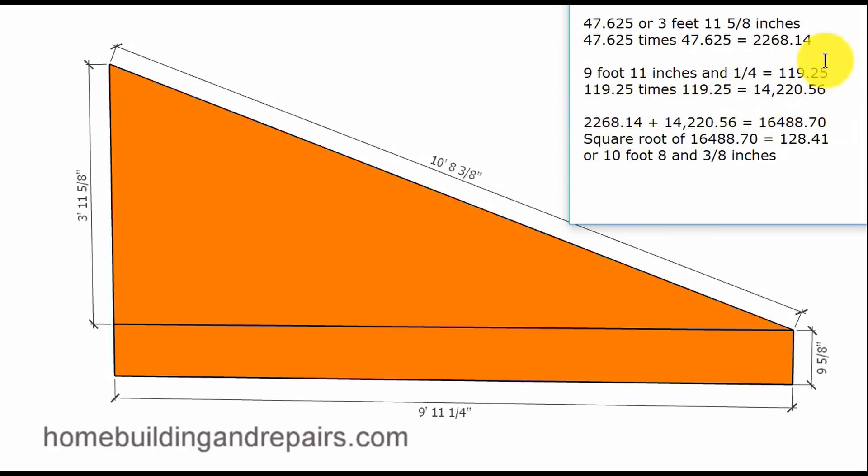This number and this number. And then that gives us sixteen thousand four hundred and eighty eight point seven. If we take the square root of that that is going to be one hundred and twenty eight point four one or ten foot eight and three eighths inches.